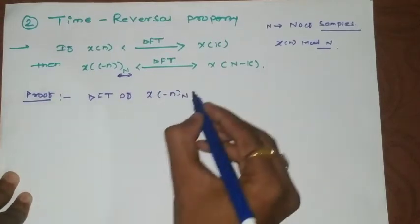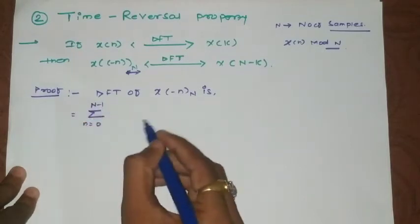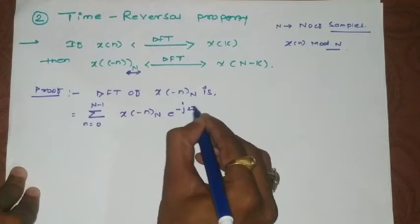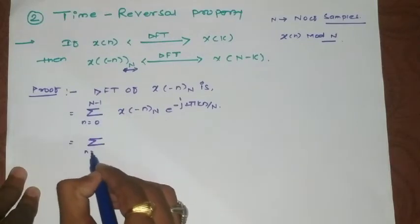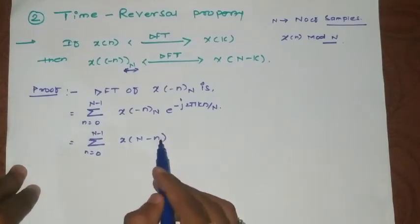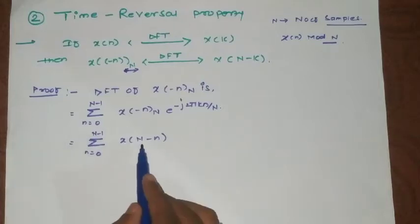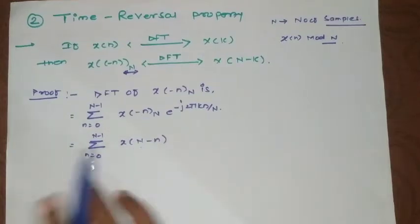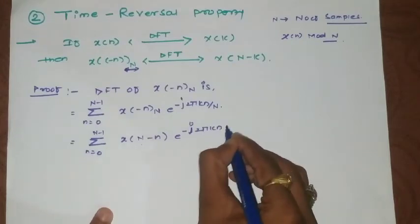To find the DFT of x(-n) base N, we apply the standard summation formula from 0 to N-1. The term x(n) base N can be written as x(N-n), because when dealing with periodicity, the signal is rotated and we add N samples to the function. Since we already have -n, adding N gives us x(N-n), with the exponential term kept as is.